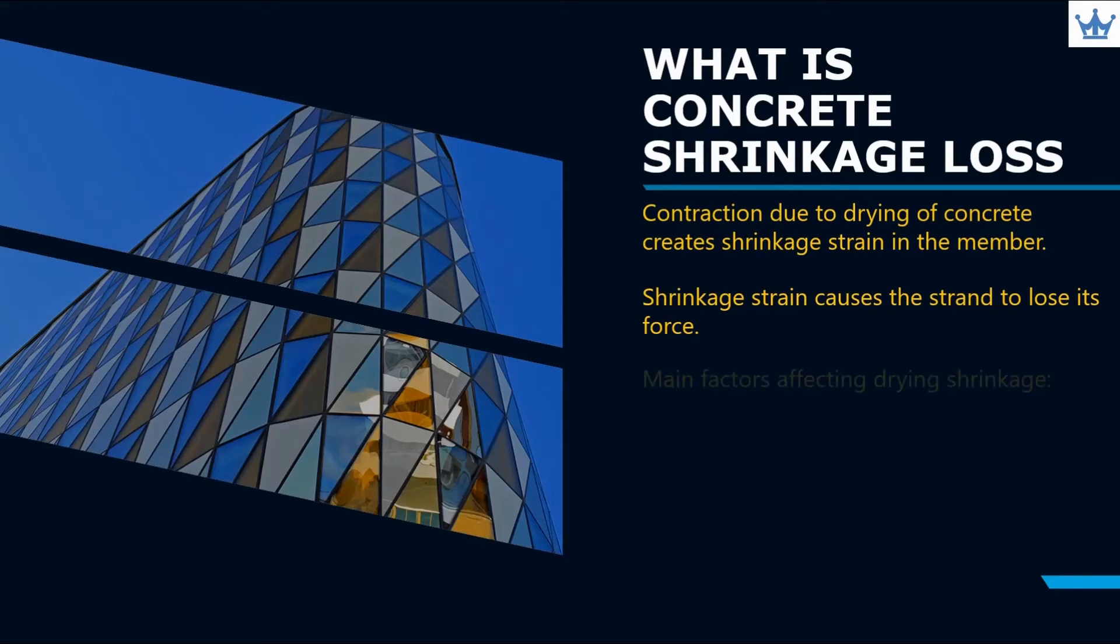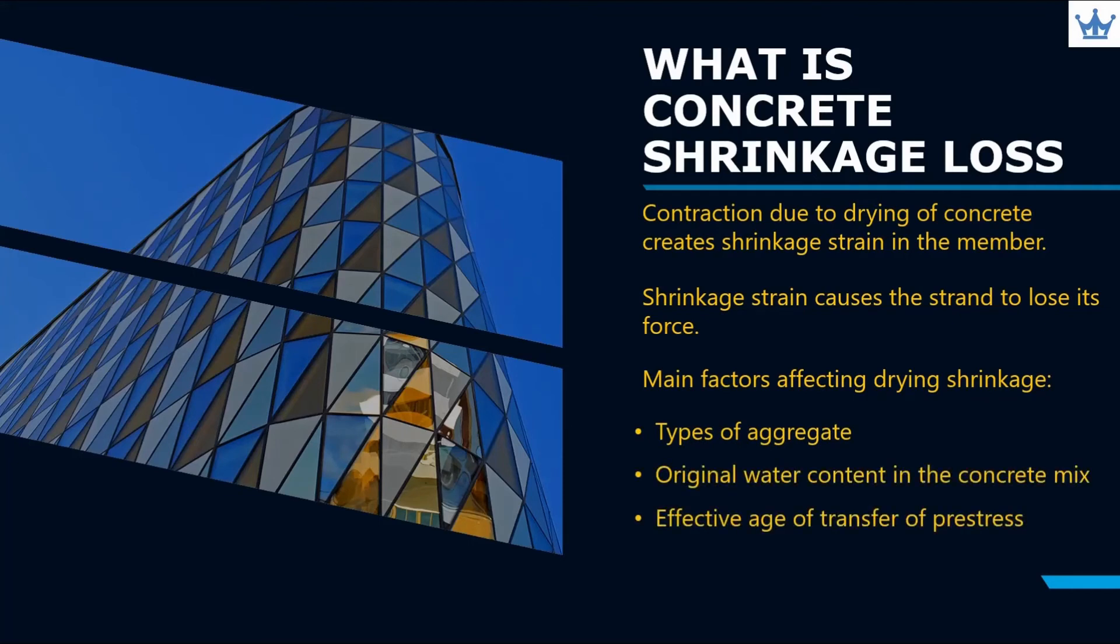Main factors affecting drying shrinkage is Types of aggregate, Original water content in the concrete mix, Effective age of transfer of pre-stress, Effective section thickness, And ambient relative humidity.